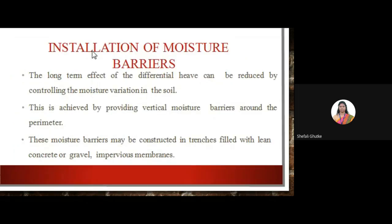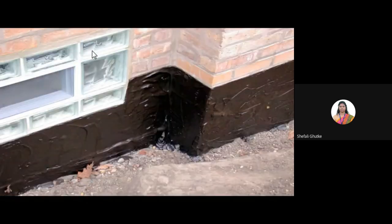Installation of a moisture barrier: the long-term effect of differential heave can be reduced by controlling moisture variation in the soil. This is achieved by providing vertical moisture barriers along the perimeter of the construction. These moisture barriers may be constructed in trenches filled with lean concrete, gravel, or an impervious membrane. This protective coating is provided at the periphery of the building to reduce moisture content.